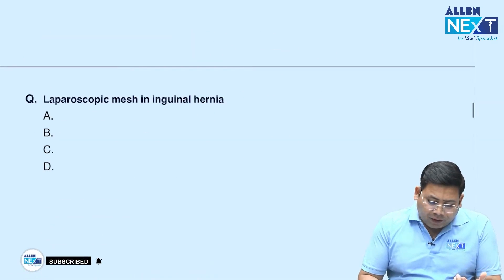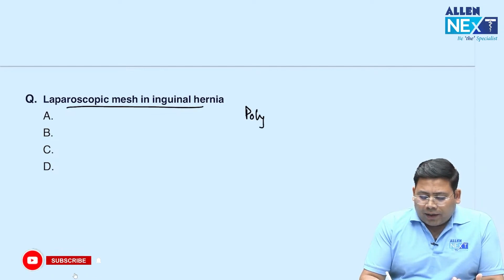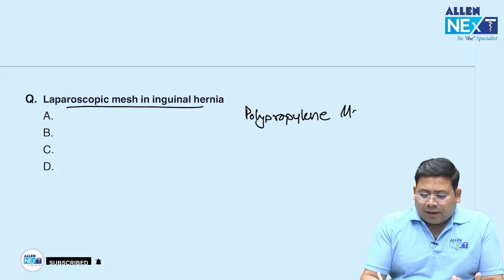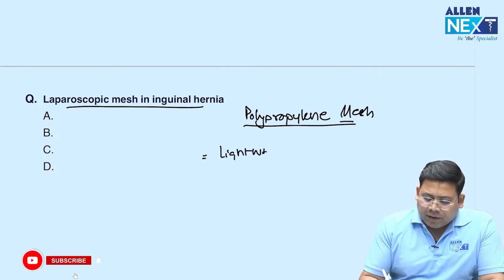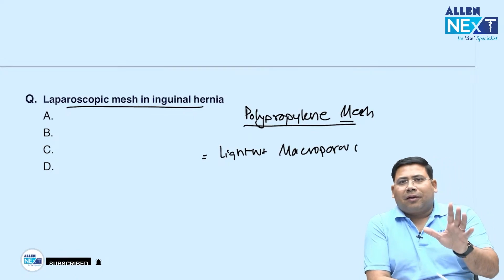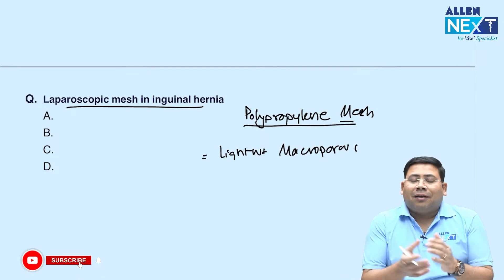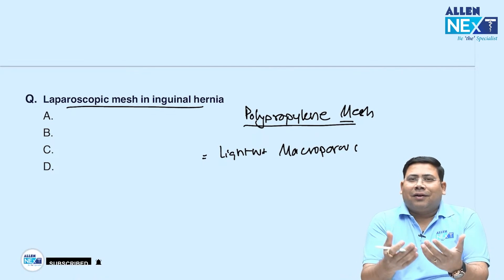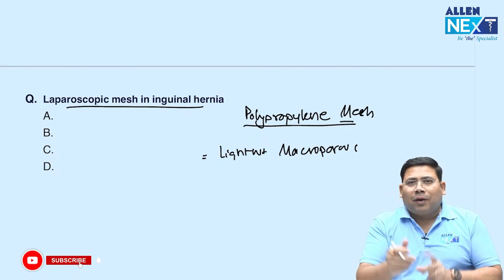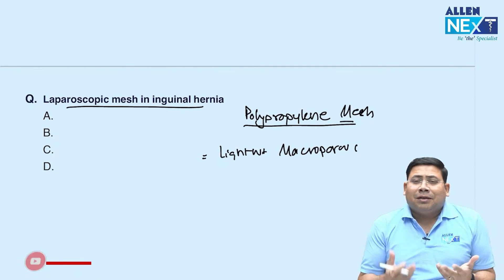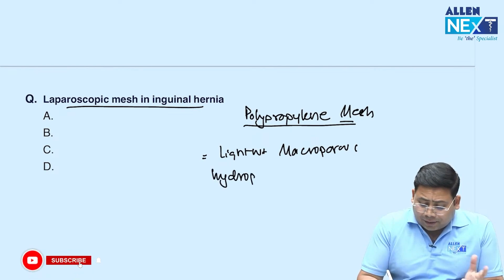Next: laparoscopic mesh in inguinal hernia. The mesh used is always polypropylene mesh. The quality of mesh should be lightweight and macroporous. Macroporous mesh allows fibroblast and collagen integration, making it better. It should also be hydrophobic — because if it reflects water, it is less prone to infection. The options weren't fully recalled, but these are the important properties.